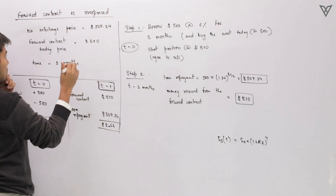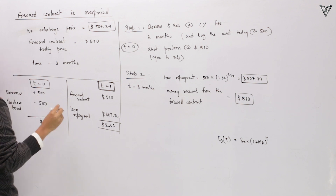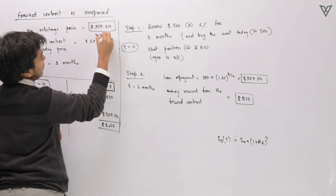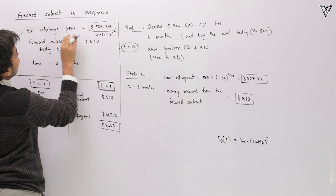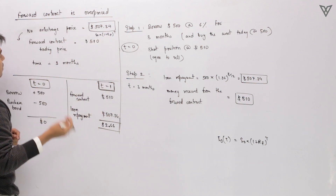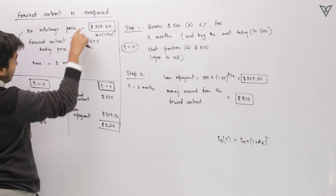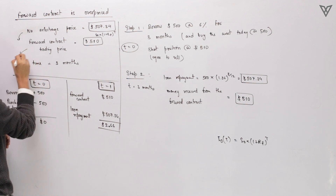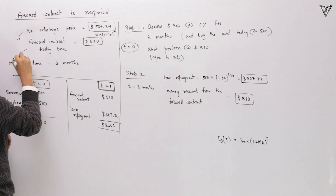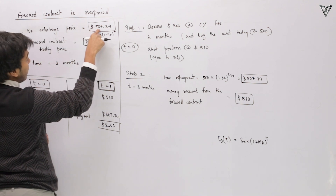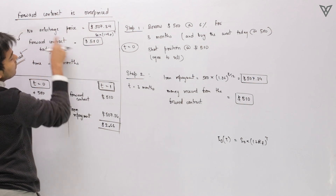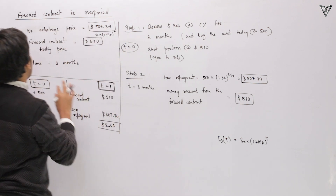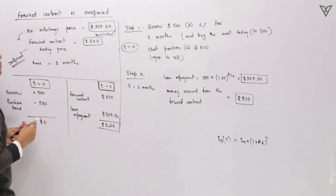Say the no-arbitrage price is $507.34 — that is, the price derived from S0 × (1 + rf)^T. However, in the market the same forward contract is trading at $510. We can see that the forward contract is overpriced. Why? Because $507.34 is the price it should be, but $510 is the price currently seen in the market. So the forward contract is currently overpriced.